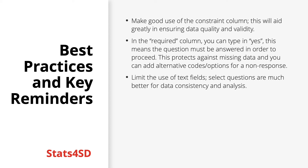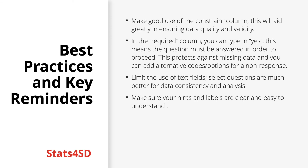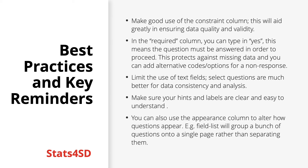Thirdly, limiting the use of text fields is always a good tip for improving data quality whether digital or not — select questions are much better for data consistency and analysis. If you really want to include the option for writing in a response, you can include 'or other' after the list name when writing a single or multiple select. This means a 'please specify' option will be included, though this will create an extra 'or other' column in your final data which could be cumbersome to analyse. Make sure your hints and labels are easy and clear to understand, and remember to use the appearance column to alter how questions appear, such as making answer choices appear in a grid or drop-down list, or making all questions within a group appear on the same page.